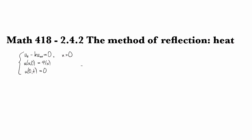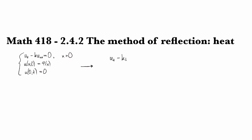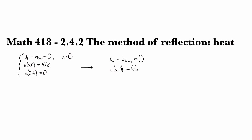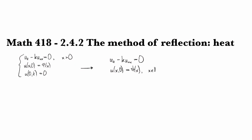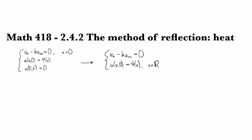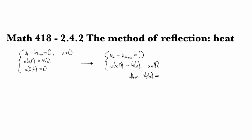So what we can do, just like we saw in the last one, is we can reduce this to a type of problem that we've already solved by making a substitution using the odd extension of the function. So we'll look at the slightly different problem. We'll define the initial condition to be psi of x, and now this is for the entire real line. And the idea here is that psi is the odd extension of phi.